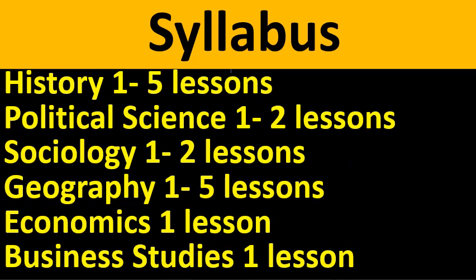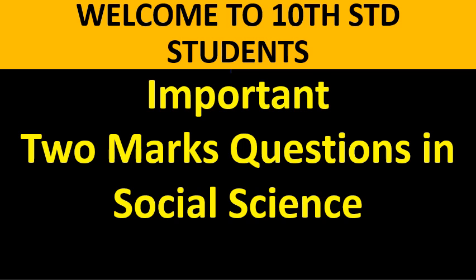I have taken the syllabus of History 5 lessons, Political Science 2 lessons, Sociology 2, Geography 5, Economics 1 and Business Studies also 1 lesson. So, totally 16 lessons I am covering. Let us know important 2-mark questions in Social Science. Some of the questions I have answered; some are not answered here due to time factor — they are easy ones and you can find them in your classwork. All the best.